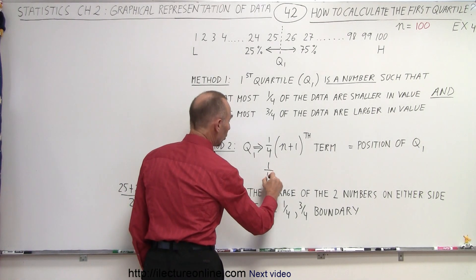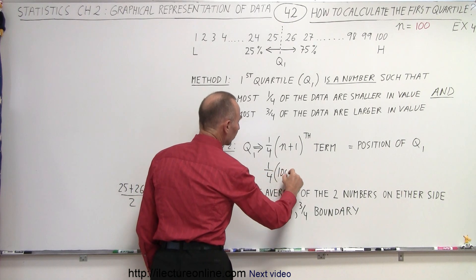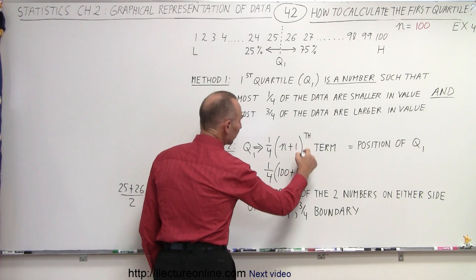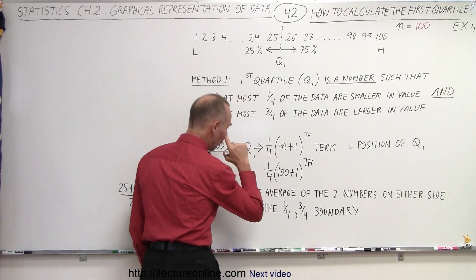We take one-quarter of the total number of data points plus 1, and that will be the position of the term that we're looking for.